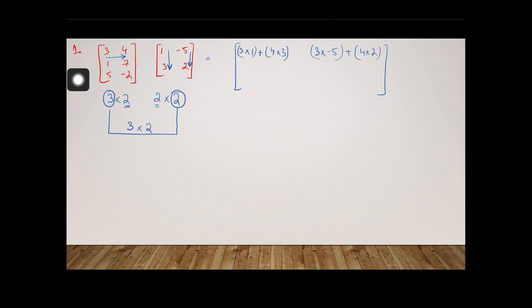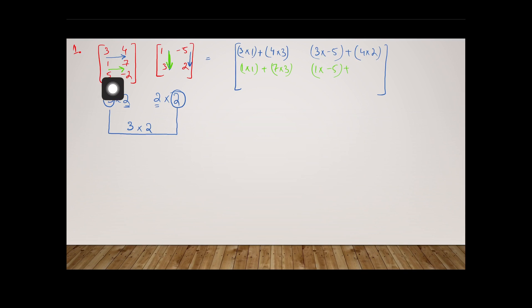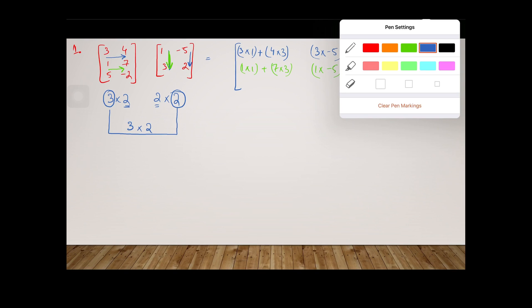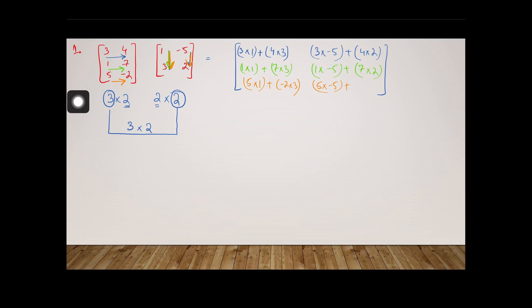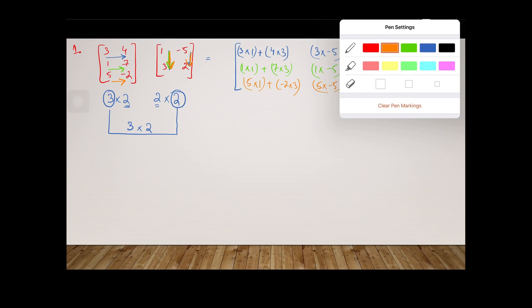Row two, one seven, multiplied with column one: one times one plus seven times three. Then multiplied with column two: one times minus five plus seven times two. Now switching to the third row in orange — five, minus two — multiplied with column one: five times one plus minus two times three. Then with column two: five times minus five plus minus two times two.